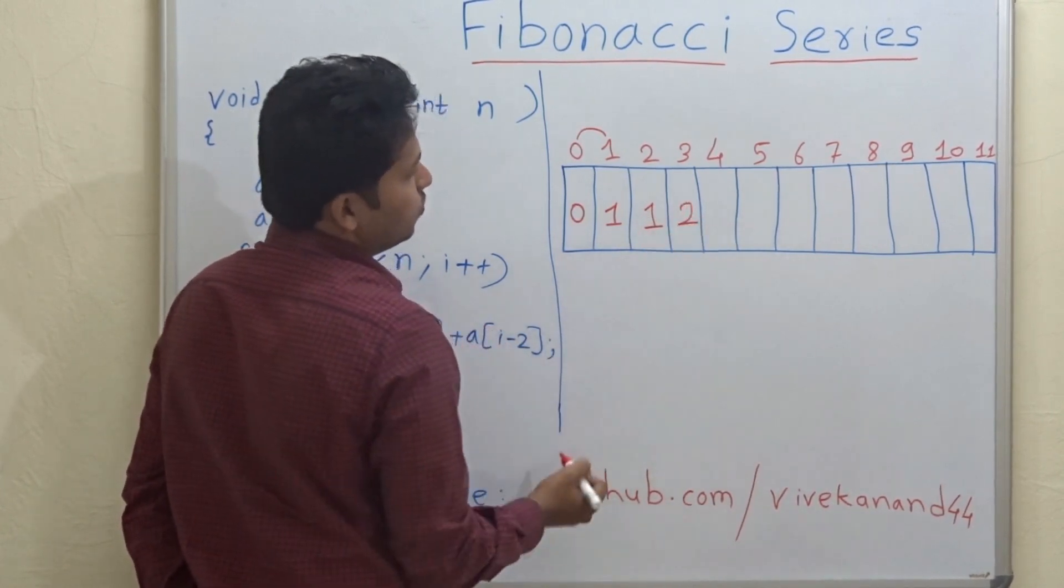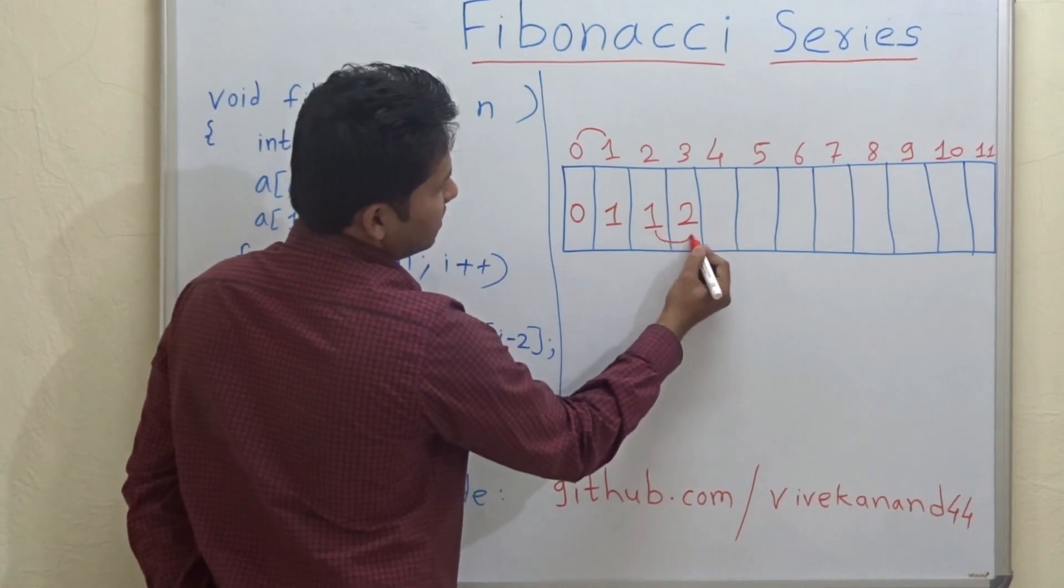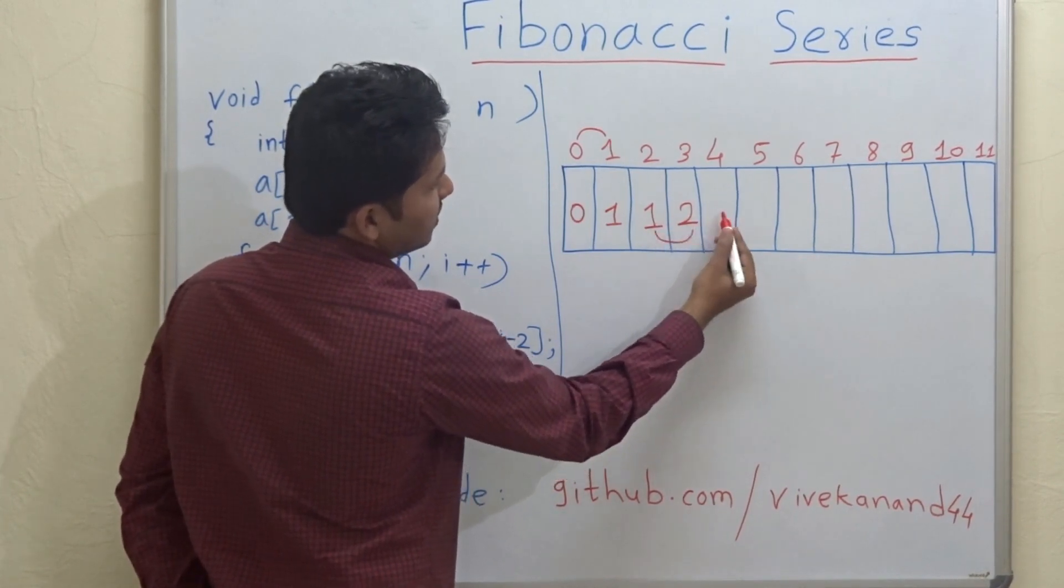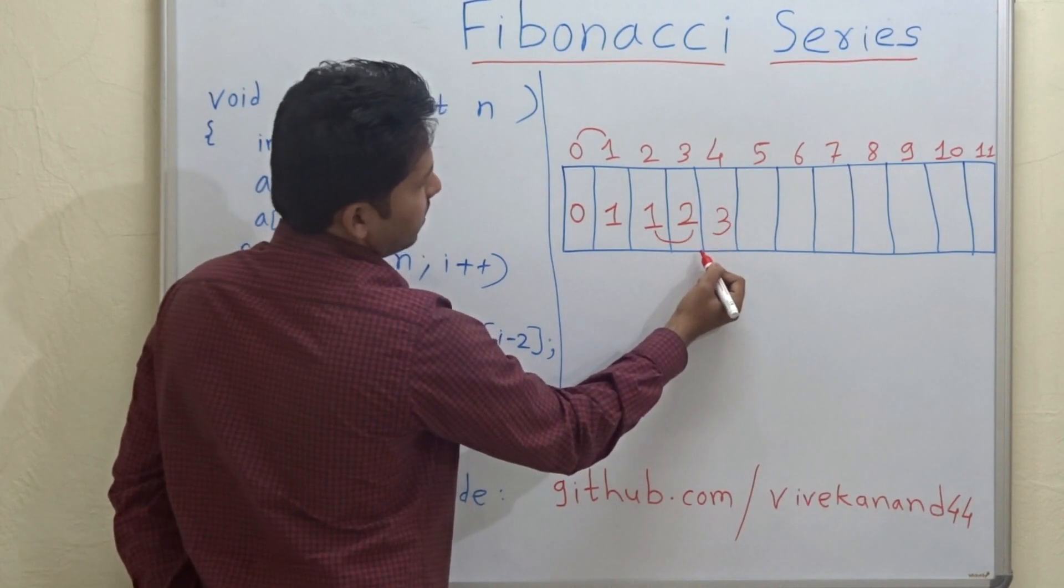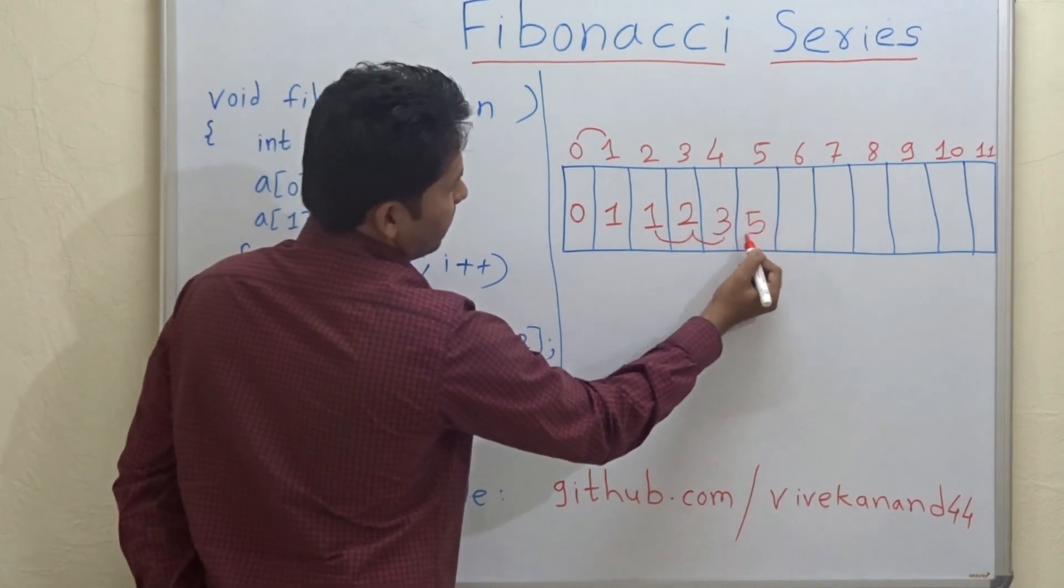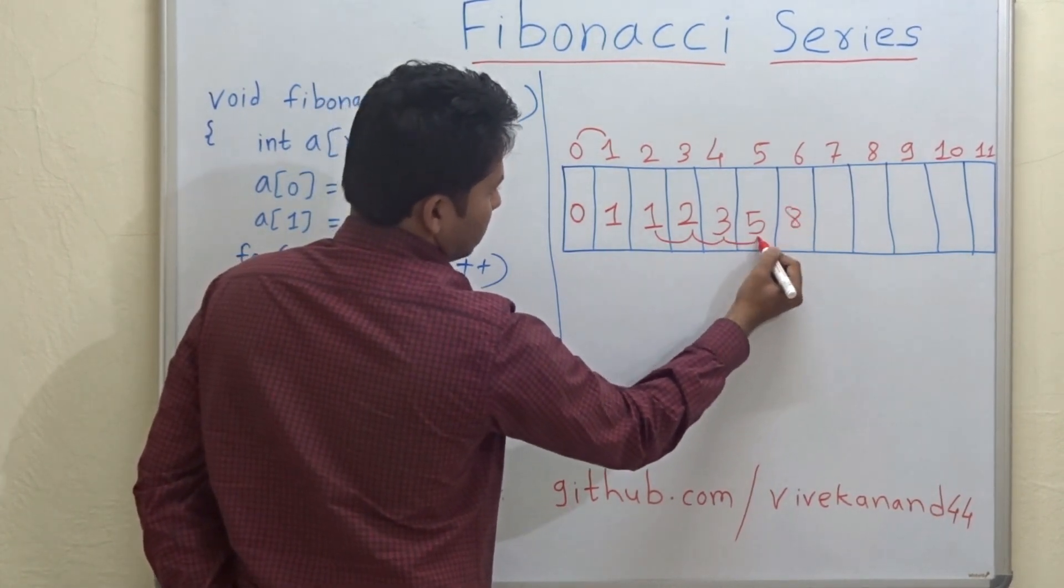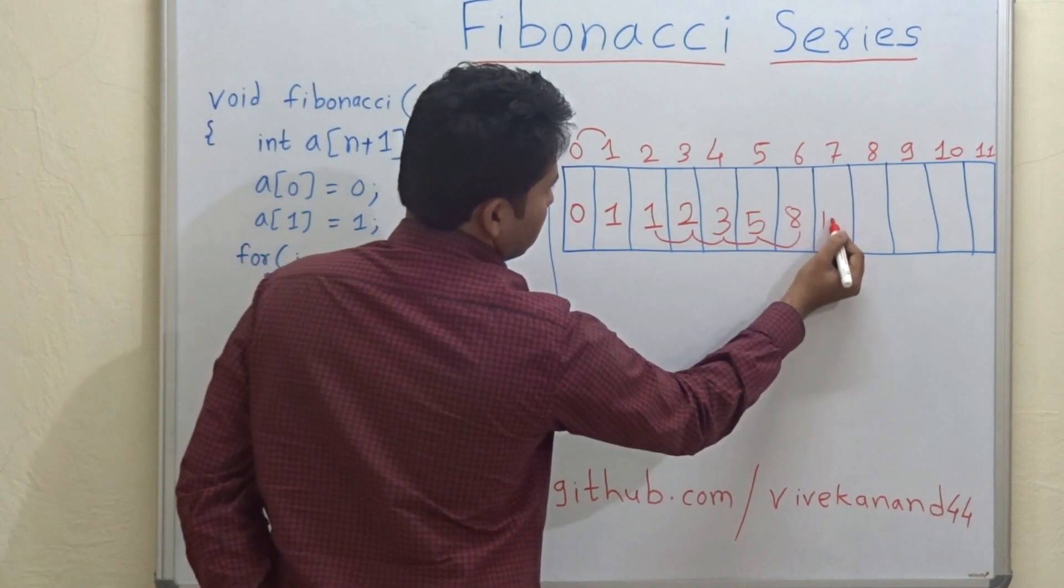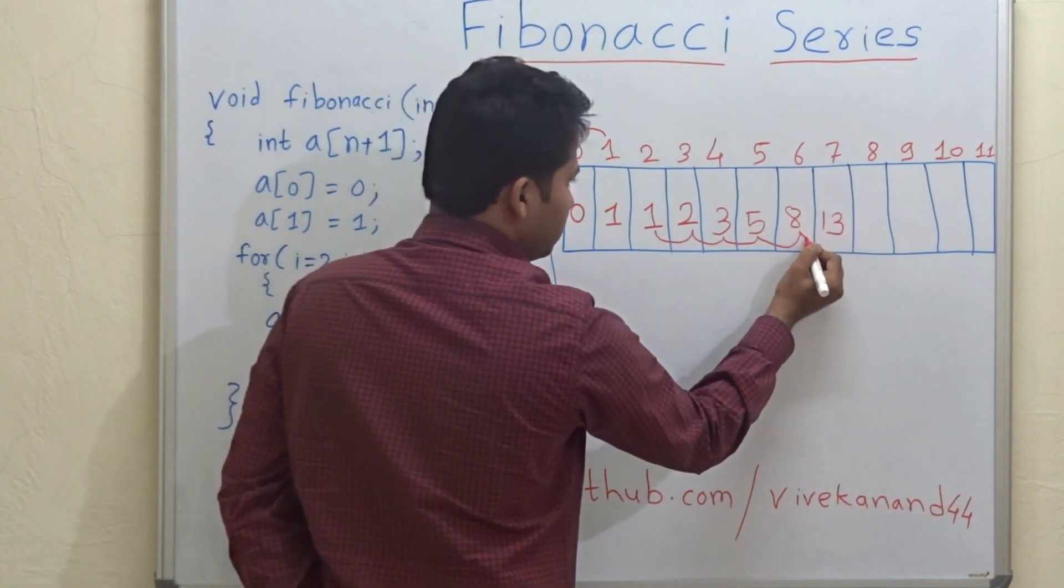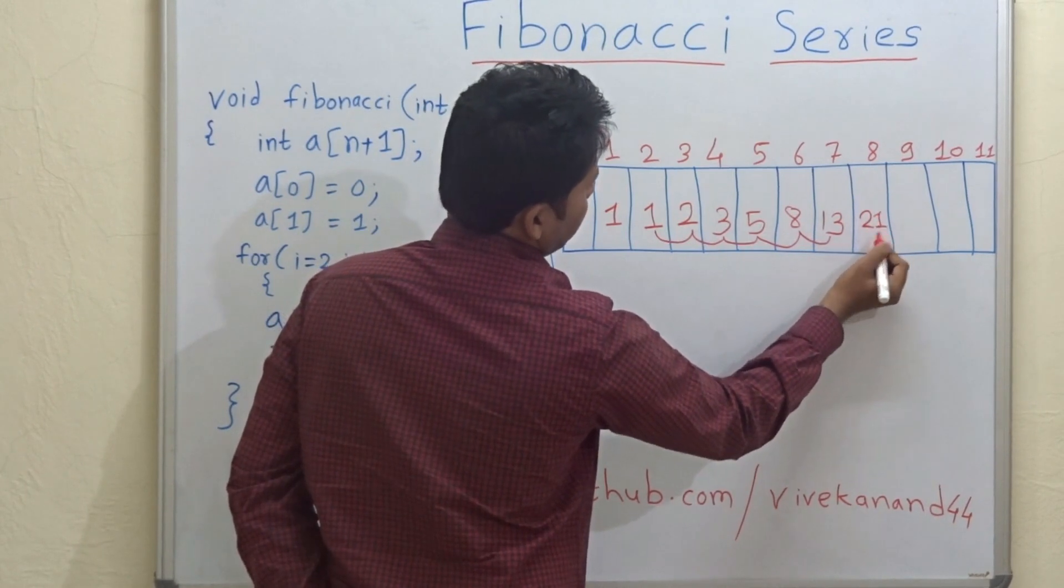Now this element will be the addition of these two elements: 1 plus 2 is 3. Now 2 plus 3 is 5, 3 plus 5 is 8, 5 plus 8 is 13, 8 plus 13 is 21, 13 plus 21 is 34.